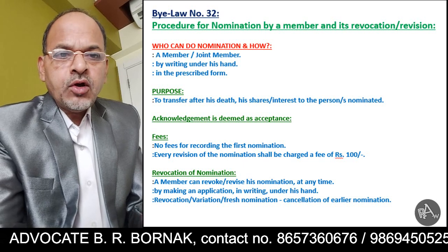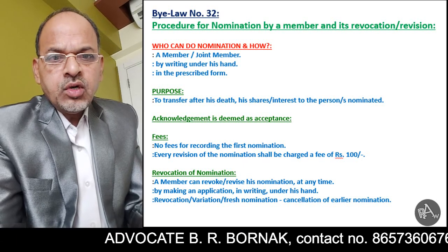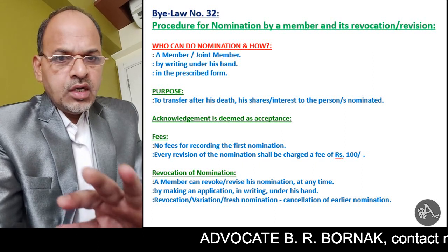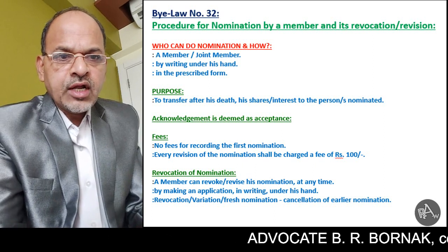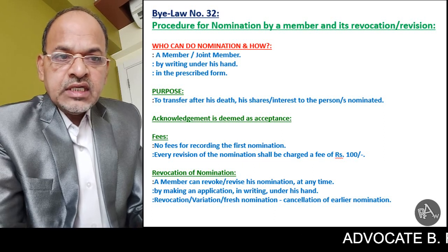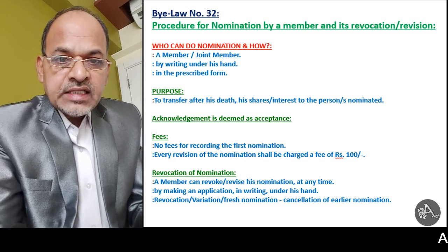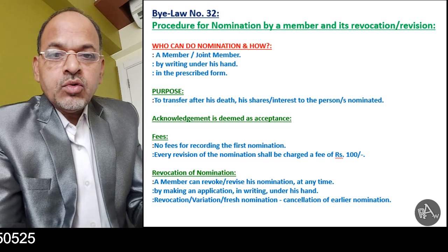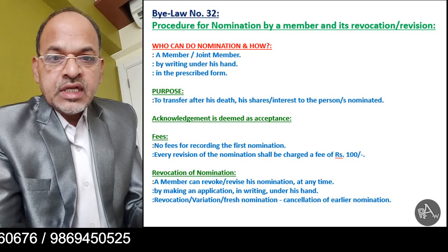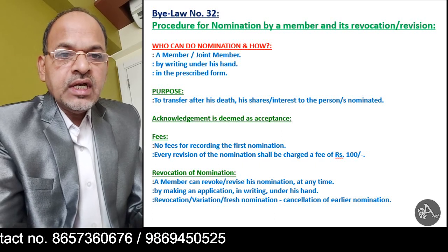Now let us see fees for nomination. There is no fees for recording the first nomination. If any member wants to record his first nomination in the record of the society, he will not have to pay any fees. But for every revision of the nomination, a fees of Rs. 100 shall be charged. Means if the member wants to revise his nomination and put on record another nomination, then for every revision of the nomination, the member will have to pay Rs. 100.